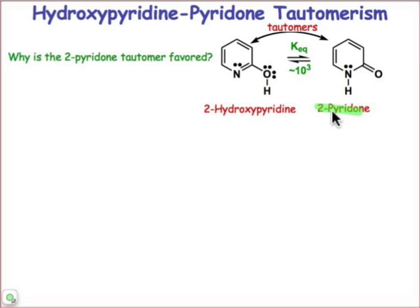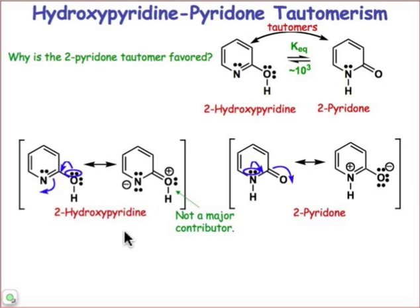We can actually understand, by taking into consideration the different resonance contributors of these two molecules, why the tautomer 2-pyridinone is more favored than 2-hydroxypyridine. For 2-hydroxypyridine, the most important resonance contributor is the neutral form, and that neutral form is aromatic. We can draw a resonance contributor in which there is donation of the oxygen lone pair into the ring, but notice that we've got negative and positive charges in a reverse sense according to their electronegativities. Oxygen is more electronegative than nitrogen — it would rather be the negatively charged species, and that's not the case for the second best resonance contributor of 2-hydroxypyridine.